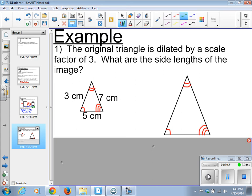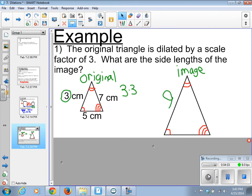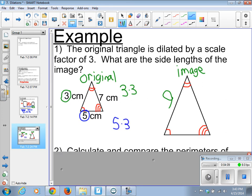And I apologize, it should be labeled better. The small one is the original and the large one is the image. We are dilating each side by a scale factor of 3. So let's start with this left side here. We just do simply 3 times 3 gives us an image length of 9. We do the base here. We take 5 times 3 for an image side length of 15.